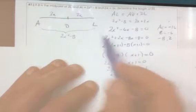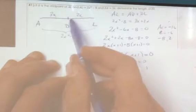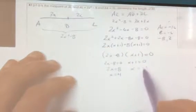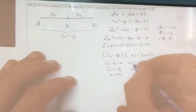And if we look at the problem, we see that for DL, 3 times negative 1, if we use negative 1, gives us negative 3 for a length, and we can't have a negative length. So x equals negative 1 is out.